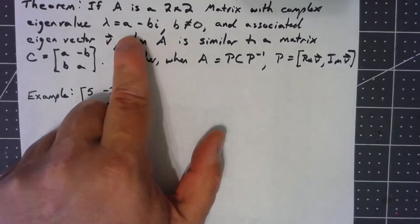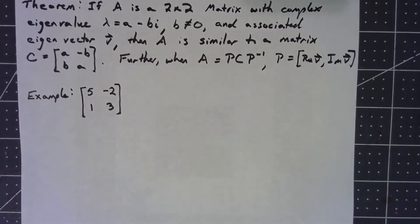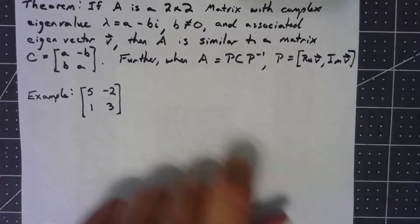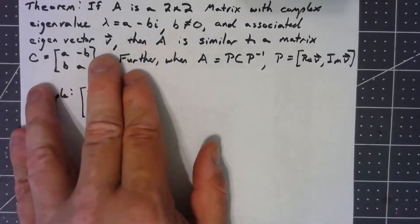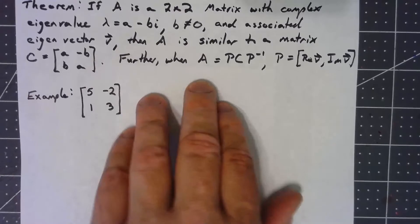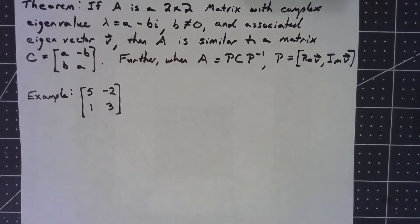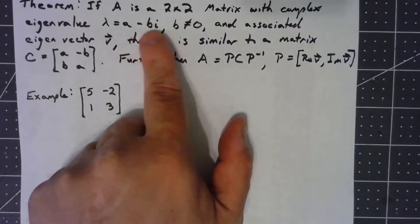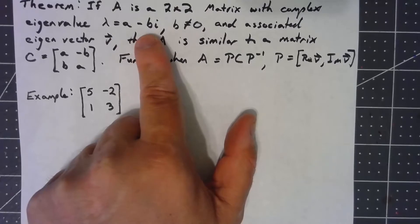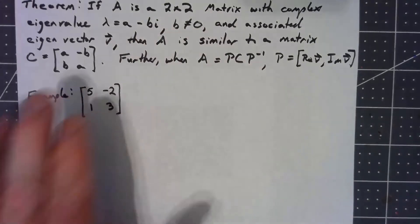First of all, we have to realize that a plus bi is also going to be an eigenvalue. But just for purposes of keeping things simple, we'll focus on the one that has the negative imaginary part, and then that's going to have an associated eigenvector. What it's going to be is that A has to be similar to a matrix of this form: [a, -b; b, a], where a and b are the same a and b from that eigenvalue.